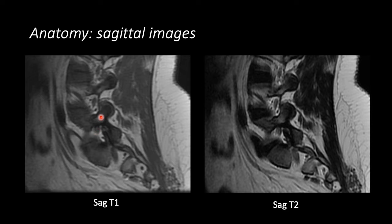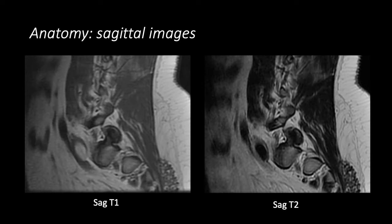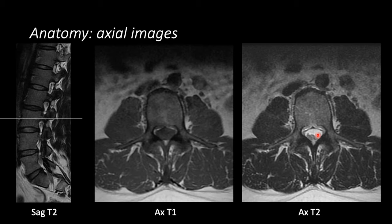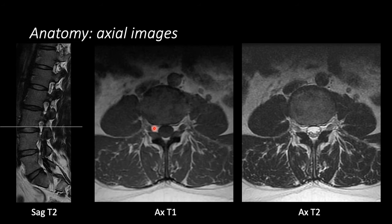This is the pedicle of L5, the superior articular process of L5, and the inferior articular process of L5. On the axial images, as we scroll down, we can see the thecal sac — this ovoid dark area surrounded by epidural fat. On the axial T2-weighted images, we can see the nerve roots within the thecal sac. Here we are at the pedicle level. As we go a little bit lower, we end up in the neural foramen and can see the nerve roots exiting on either side.